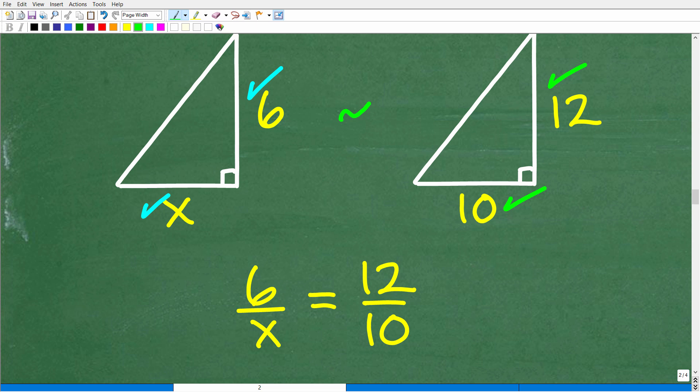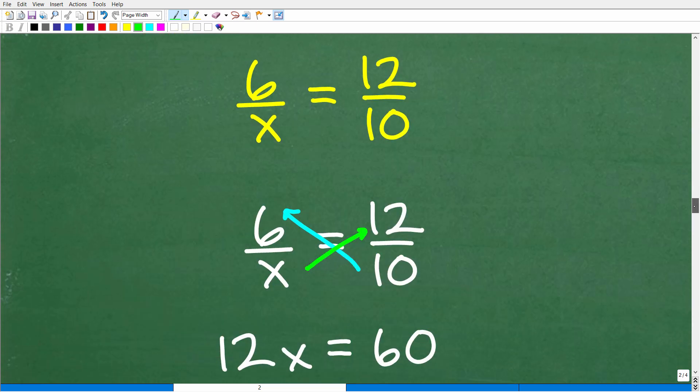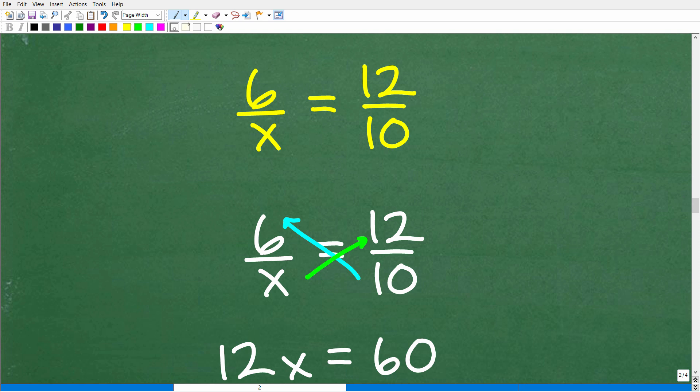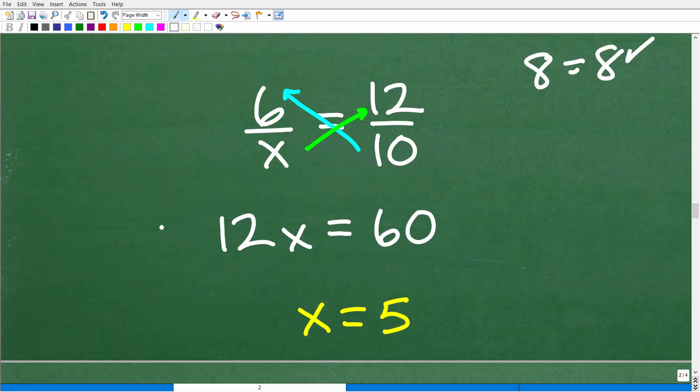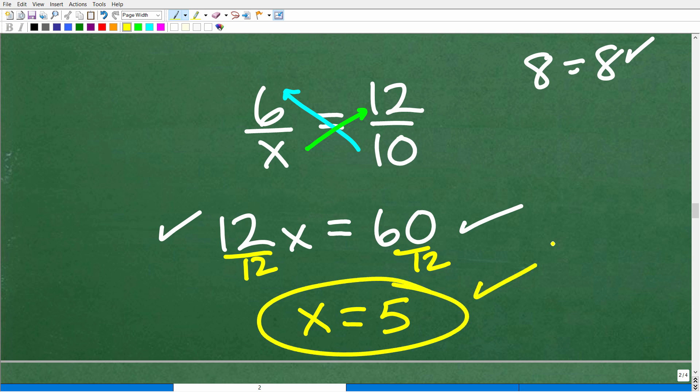If you understand the setup, the algebra is going to be very easy. To solve a proportion, all we need to do is use the cross product. A proportion is 2 equal fractions. If I have the fraction 1 half is equal to 4 over 8, those fractions are equal. If you notice here, if I go crosswise, I multiply crosswise, i.e. the cross product, 1 times 8 is 8 and 2 times 4 is 8. Therefore, the cross product is equal. Let's go ahead and apply the cross product. So I'll have 12 times x, which of course would be 12x, and 6 times 10, which of course would be 60. And to solve for x, all I have to do is divide both sides of the equation by 12. 60 divided by 12 is 5, x is equal to 5.